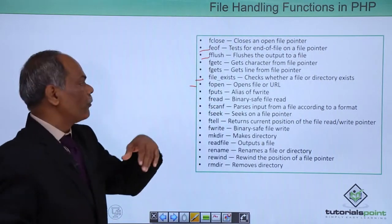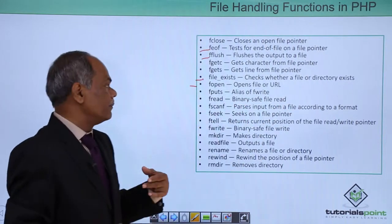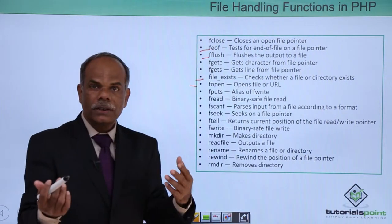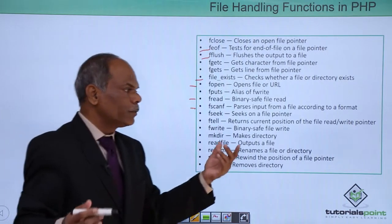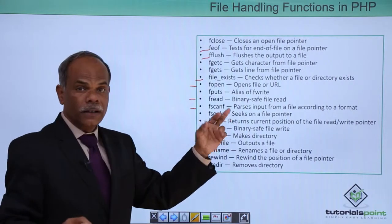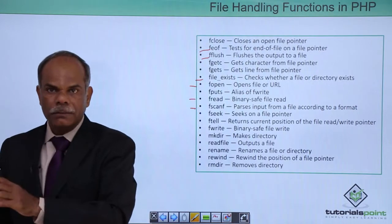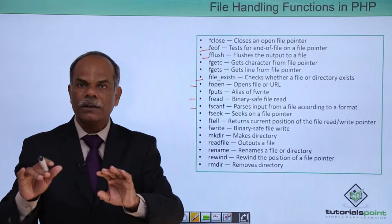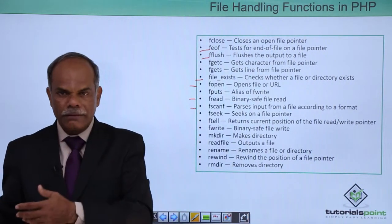fputs is the opposite of fgetc — fputs writes a string into the file. fread reads the data in binary mode. fscanf parses the input file according to the format specifier that you use. fscanf reads the data from the file and puts it into variables as per the formats you specify. If you use %d, the data will be read into an integer variable; %f into a double variable, and so on.